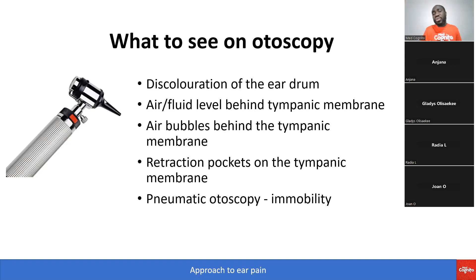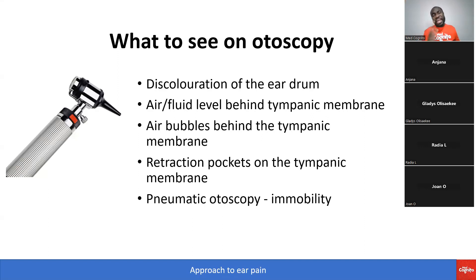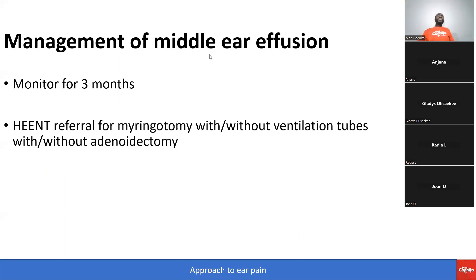What are you going to see on otoscopy? There may be discoloration of the eardrum, and an air-fluid level may be found behind the tympanic membrane. You may see air bubbles behind the tympanic membrane and retraction pockets of the tympanic membrane. If you perform insufflation — putting some air in — the eardrum does not move: an immobile eardrum.